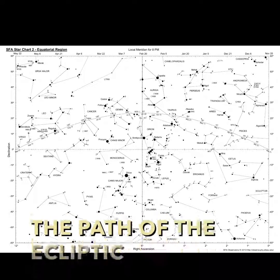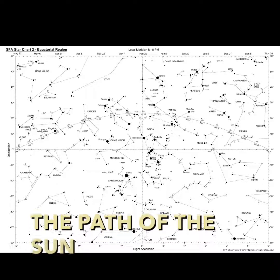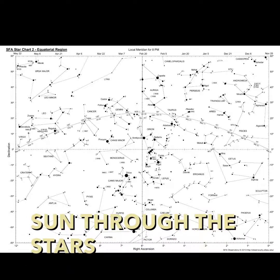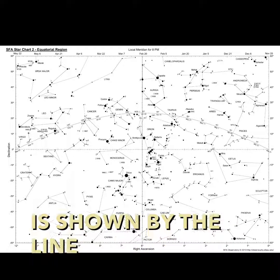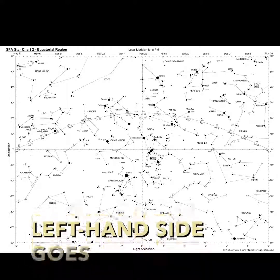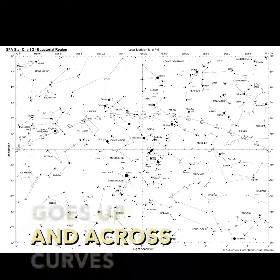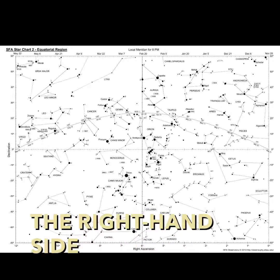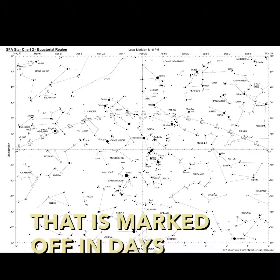The path of the ecliptic, that is the path of the Sun through the stars, is shown by the line that starts on the left hand side, goes up and across and curves down to the right hand side. That is marked off in days.